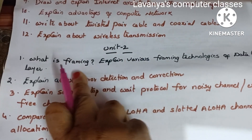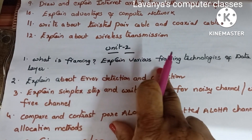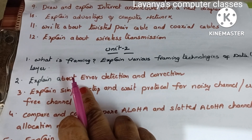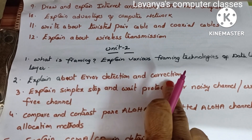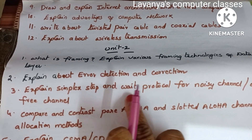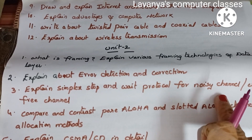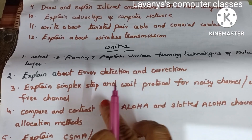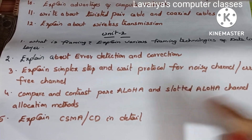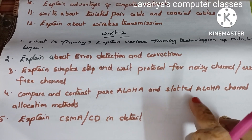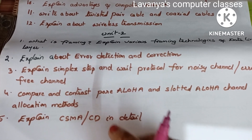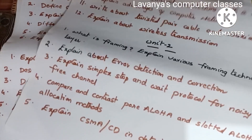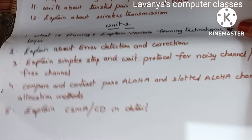Unit 2 questions: What is framing? Explain various framing technologies of the data link layer. Second, explain about error detection and correction. Third, explain simplex stop-and-wait protocol for a noisy channel and also for an error-free channel. Fourth, compare pure ALOHA and slotted ALOHA channel allocation methods — very important. Fifth, explain CSMA/CD in detail.